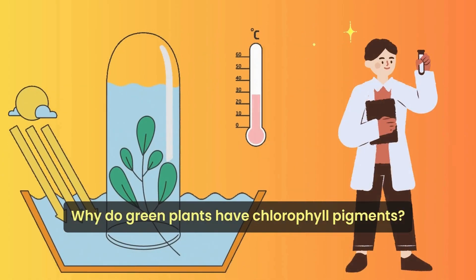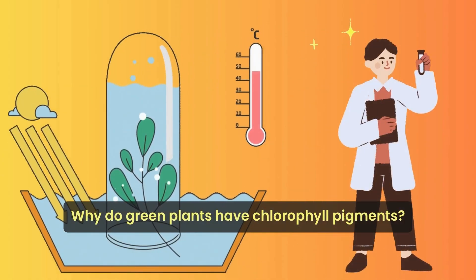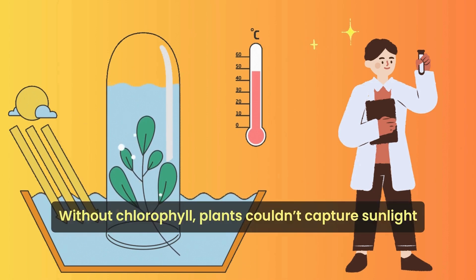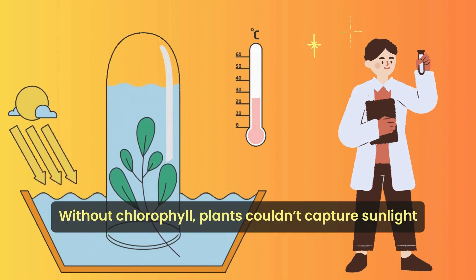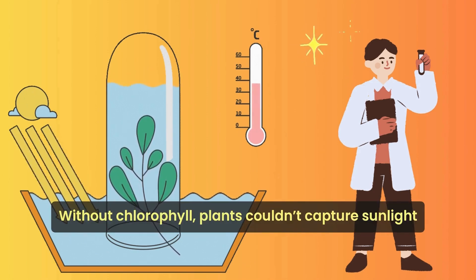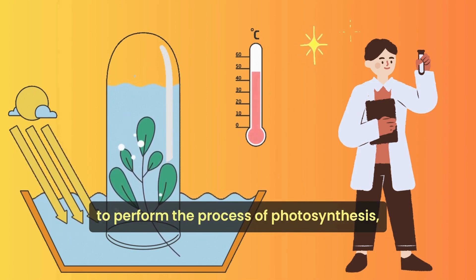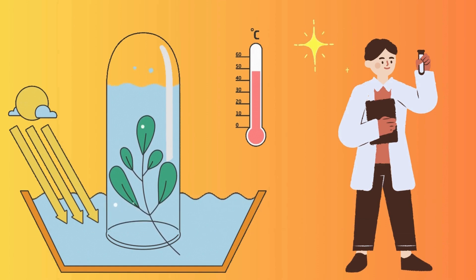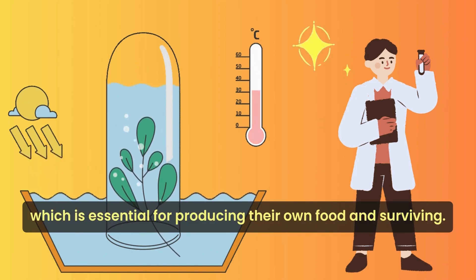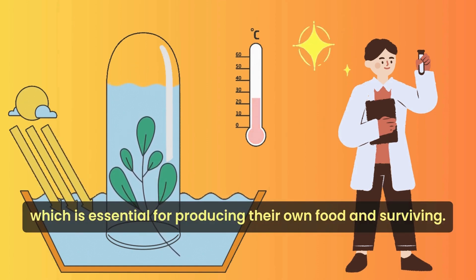Why do green plants have chlorophyll pigments? Without chlorophyll, plants couldn't capture sunlight to perform the process of photosynthesis, which is essential for producing their own food and surviving.